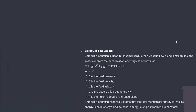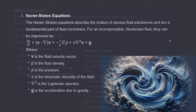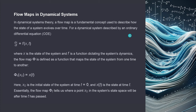You have to know Bernoulli's equation, Euler's equation, and of course Navier-Stokes equation. Flow maps is a very simple concept. In dynamical system theory, a flow map is a fundamental concept used to describe how the state of a system evolves over time. We have an ordinary differential equation where we look at the state — for example, the position of the Apollo spaceship — and f is a function dictating the system's dynamics, exactly like they did in the Apollo program. The flow map phi is now defined as a function that maps the state of a system from one time to another. This is the flow map idea.